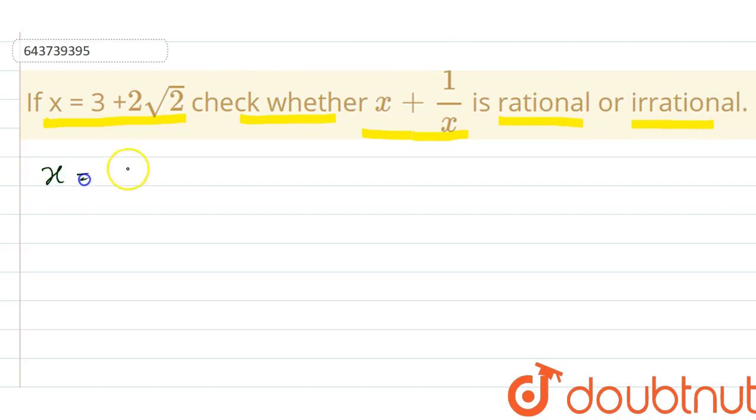So 1 upon x, that is 1 upon the value of x which is given as 3 plus 2 root 2. So 1 upon x will be 1 upon 3 plus 2 root 2. Now whenever root sign is in denominator, we should rationalize the denominator.